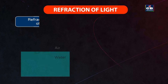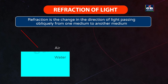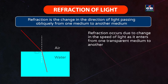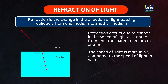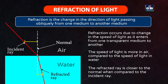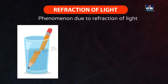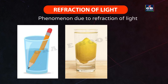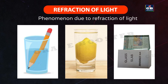Refraction of light: refraction is the change in direction of light passing obliquely from one medium to another. It occurs due to a change in the speed of light. The speed of light is greater in air, whereas it is less in water. When a light ray enters from air to water, it bends towards the normal. In daily life, examples include a pencil appearing displaced when partly immersed in water, a lemon in water appearing bigger, and letters appearing raised when seen through a glass slab.